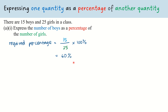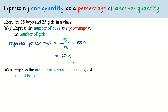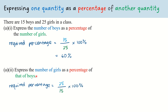In the second part, we express the number of girls as a percentage of the number of boys. Here, the number of girls (25) is in the numerator and the number of boys (15) is in the denominator: 25 over 15 times 100% gives us 166 and 2 over 3%. Our denominator need not always be bigger than the numerator — we always refer to how the question is phrased to form the fraction, then key into the calculator to get the required percentage.